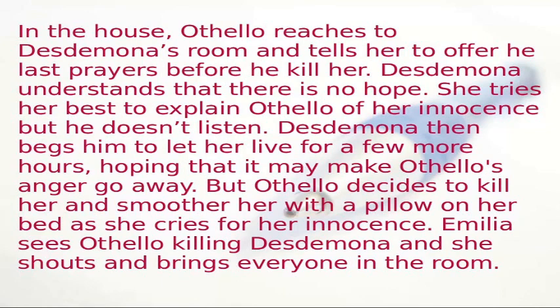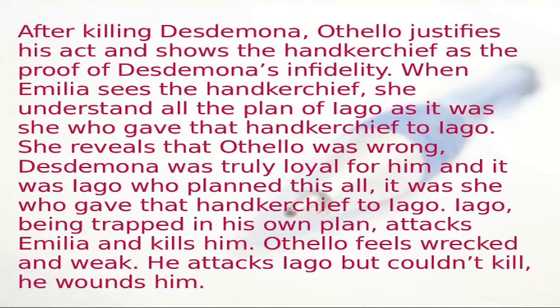Emilia sees Othello killing Desdemona and shouts, bringing everyone into the room. After killing Desdemona, Othello justifies his act and shows the handkerchief as proof of her infidelity. When Emilia sees the handkerchief, she understands Iago's entire plan — it was she who gave that handkerchief to Iago. She reveals that Othello was wrong, Desdemona was truly loyal to him, and it was Iago who planned it all. Iago, trapped by his own scheme, attacks and kills Emilia.